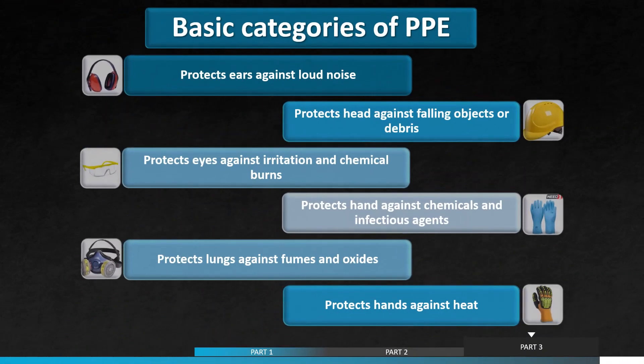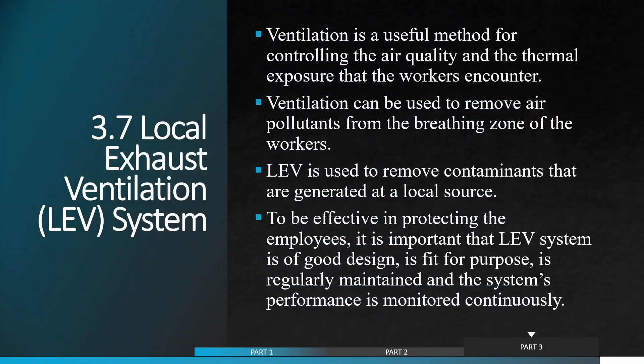Employees must choose the right equipment based on the work they are dealing with. A local exhaust ventilation system can be used to remove chemical contaminants from the air.